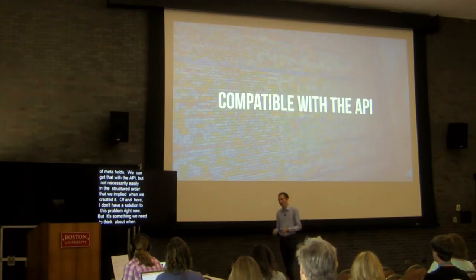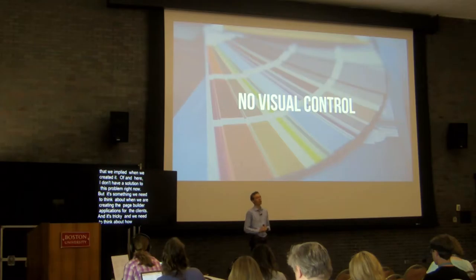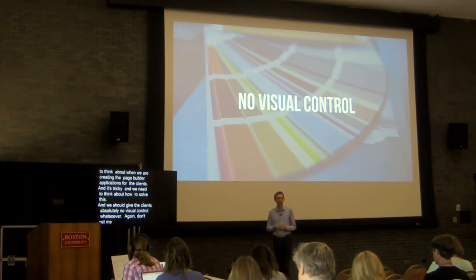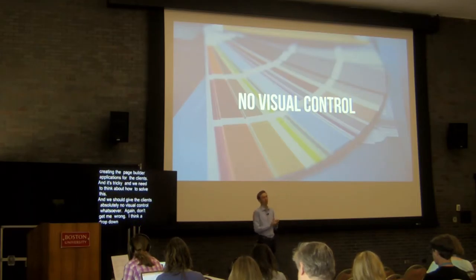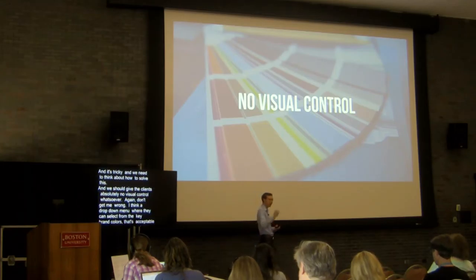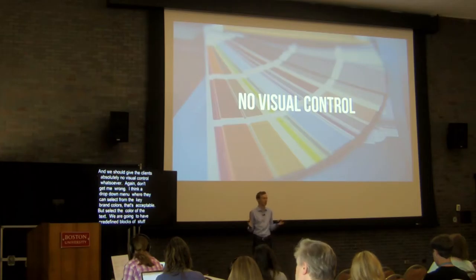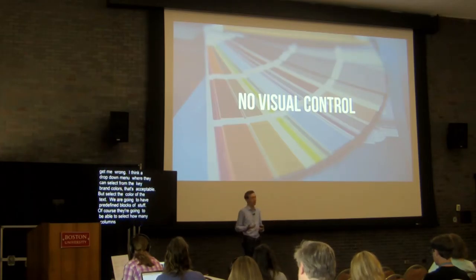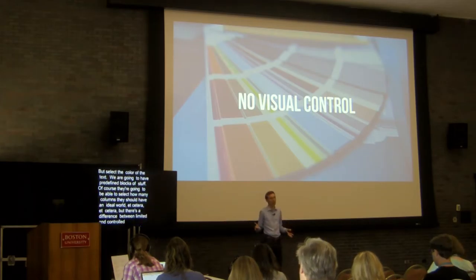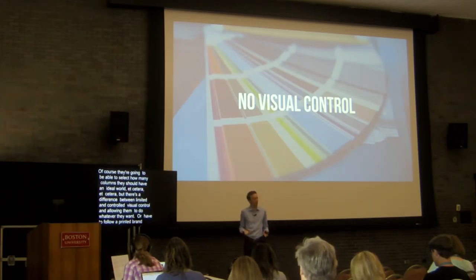We should give clients absolutely no visual control whatsoever — and don't get me wrong, I think a dropdown menu where they can select from the key brand colors is perfectly acceptable. They can also select the color of text. We'll define some predefined blocks they can use. They'll be able to select how many columns they should have in an ideal world. But there's a difference between limited and controlled visual control versus basically allowing them to do whatever they want, or having to follow a printed brand manual when updating their website — which is not helping them do things efficiently.